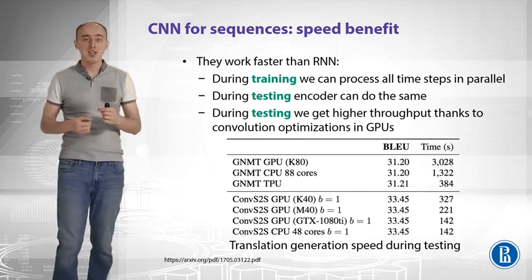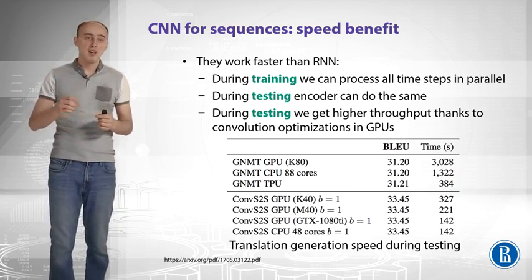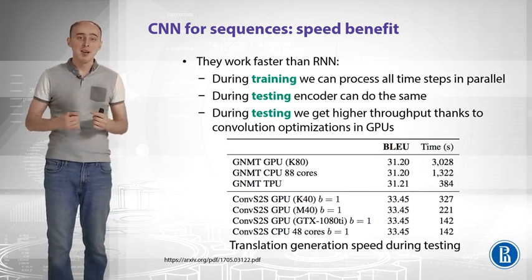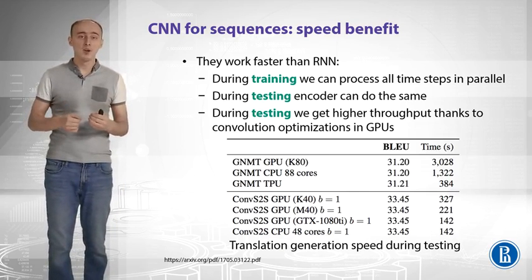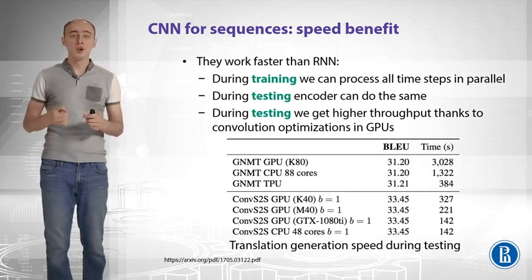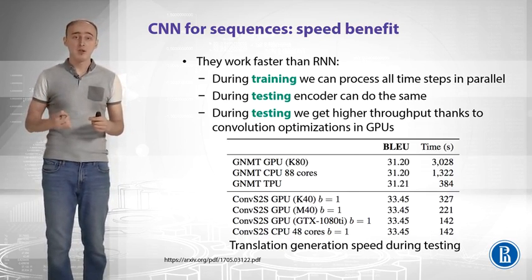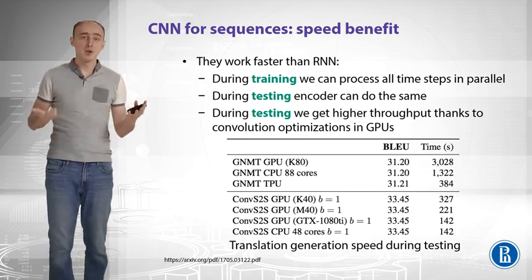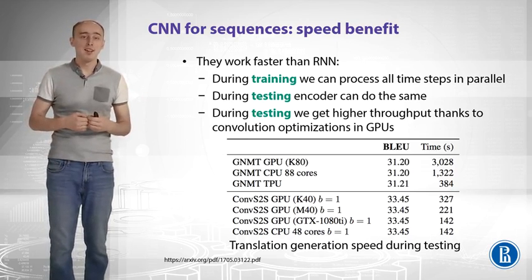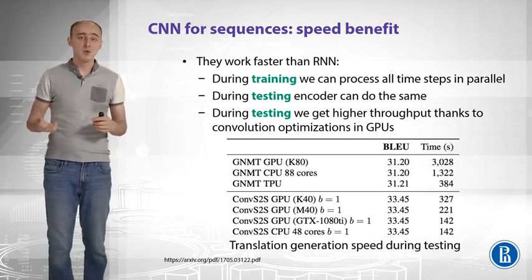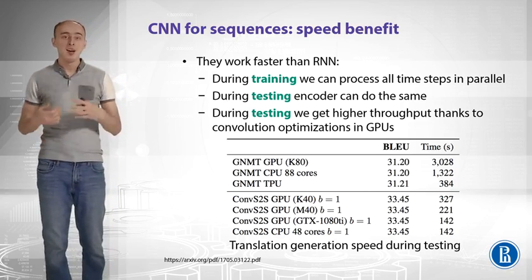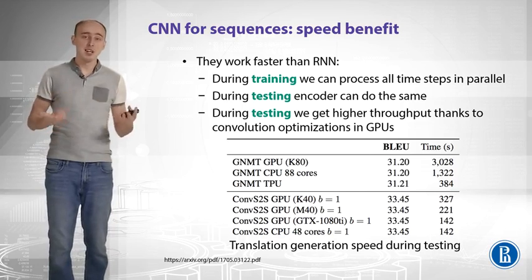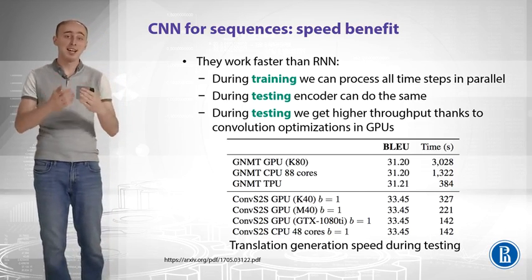You can see a table comparing an LSTM-based model with a convolutional sequence-to-sequence model. The convolutional model provides a better score in translation quality and runs 10 times faster. For real-world systems like Facebook's post translation service, speed is critical, so CNN may be a very good choice for production deployment. By the way, this paper is by the folks from Facebook.